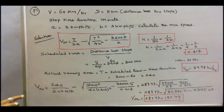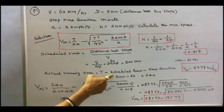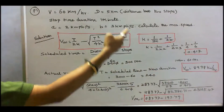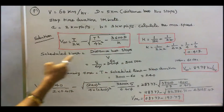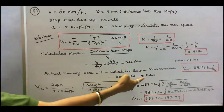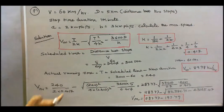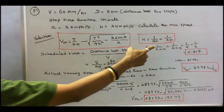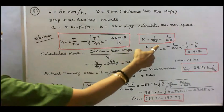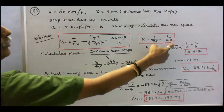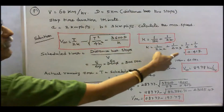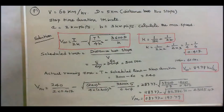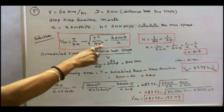Actual running time T = scheduled time − stop duration = 300 − 60 = 240 seconds. The value of K = 1/(2×2) + 1/(2×3) = 0.417.